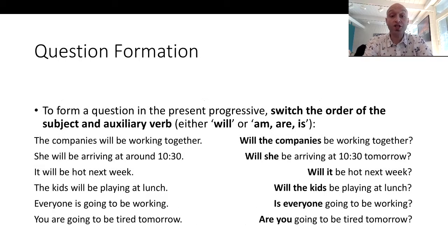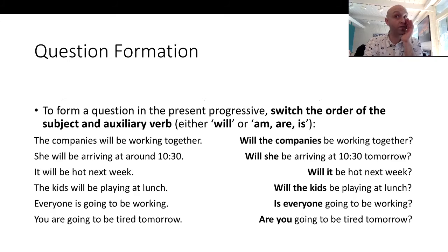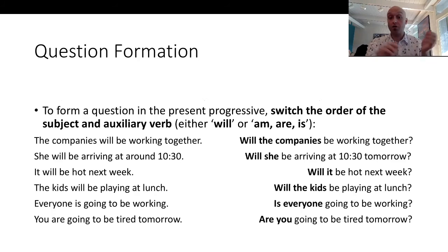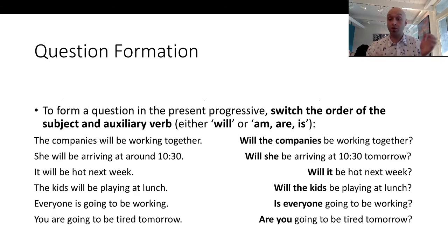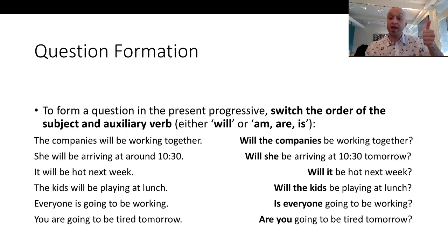To form a question in the future progressive, all you have to do is switch the order of the subject and the auxiliary verb. 'The companies will be working together' → 'Will the companies be working together?' 'She will be arriving around 10:30' → 'Will she be arriving at around 10:30?' 'It will be hot next week' → 'Will it be hot next week?' 'The kids will be playing at lunch' → 'Will the kids be playing at lunch?'